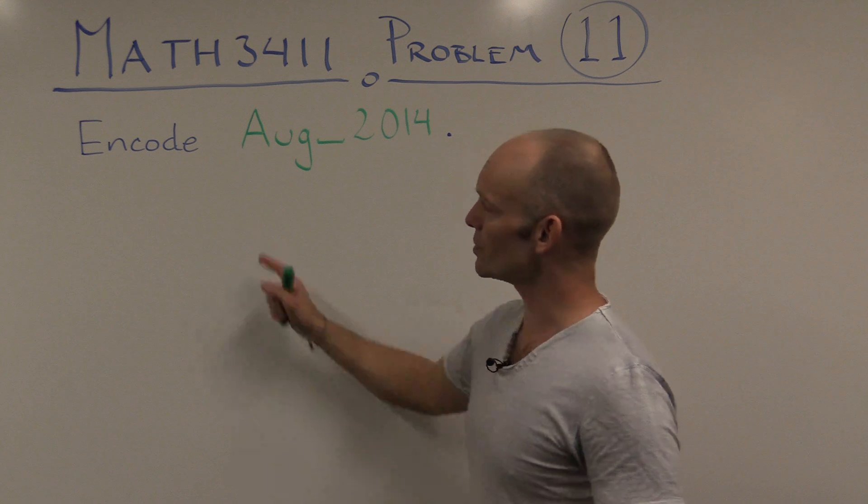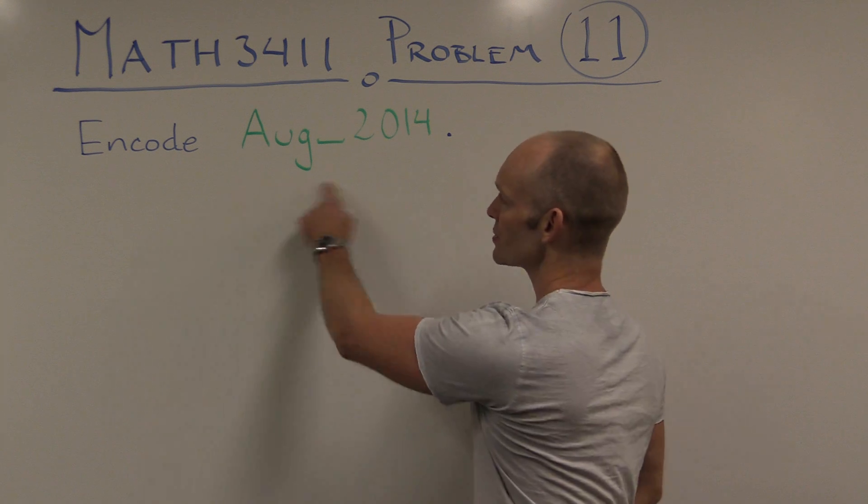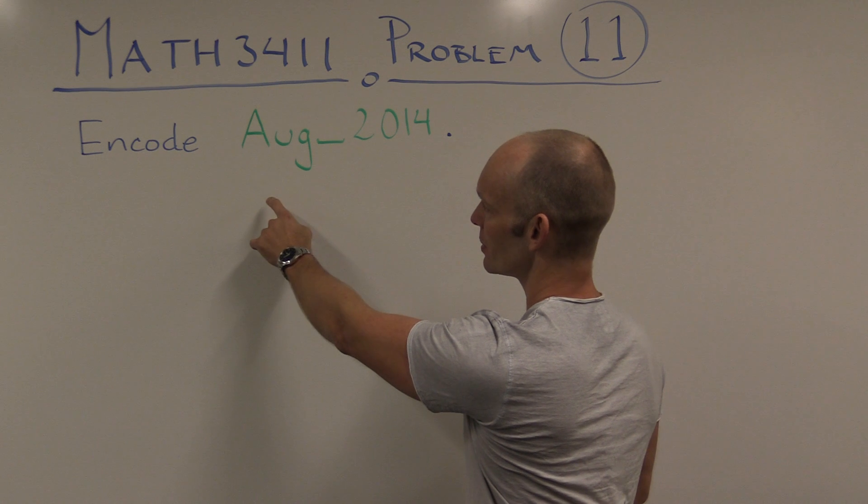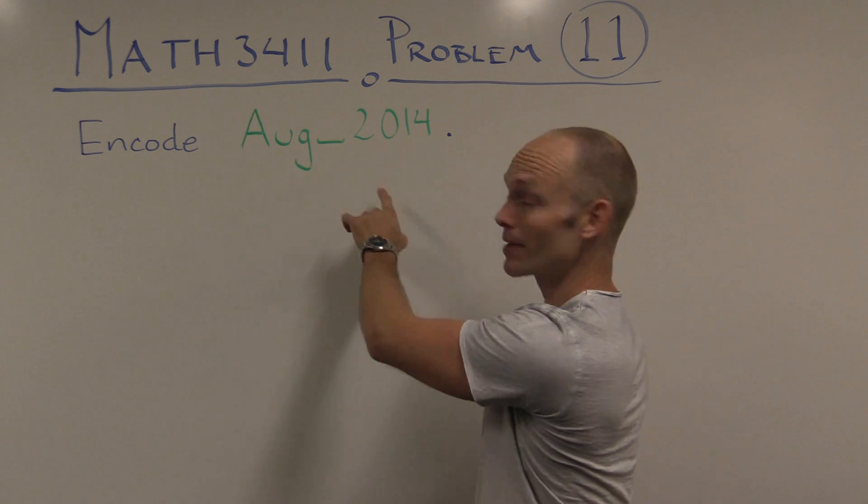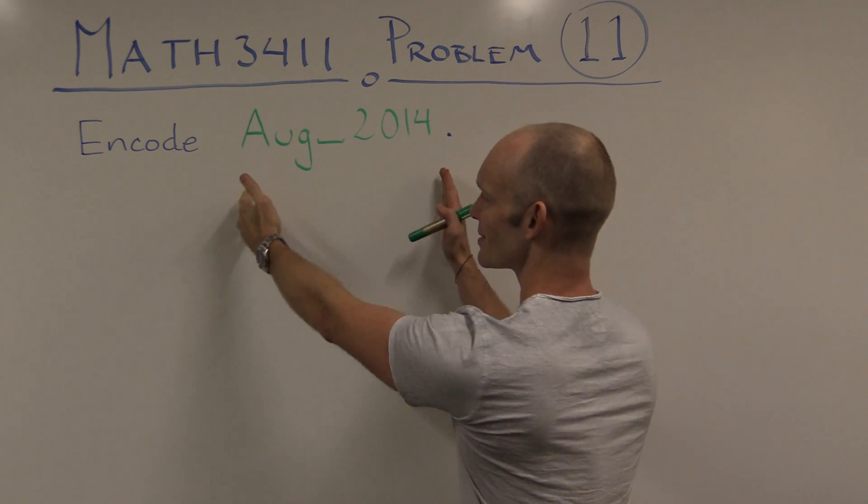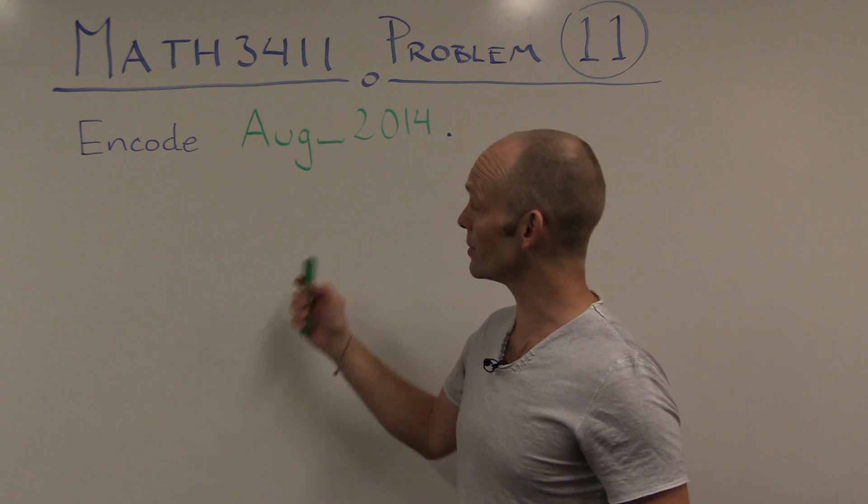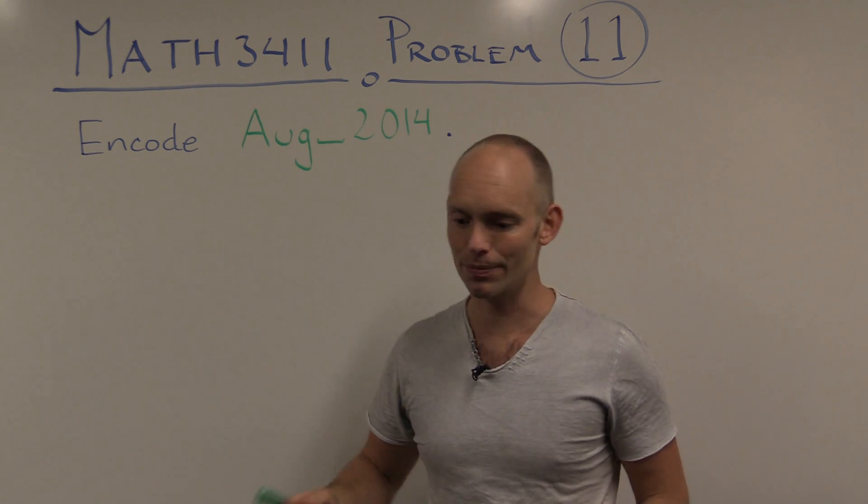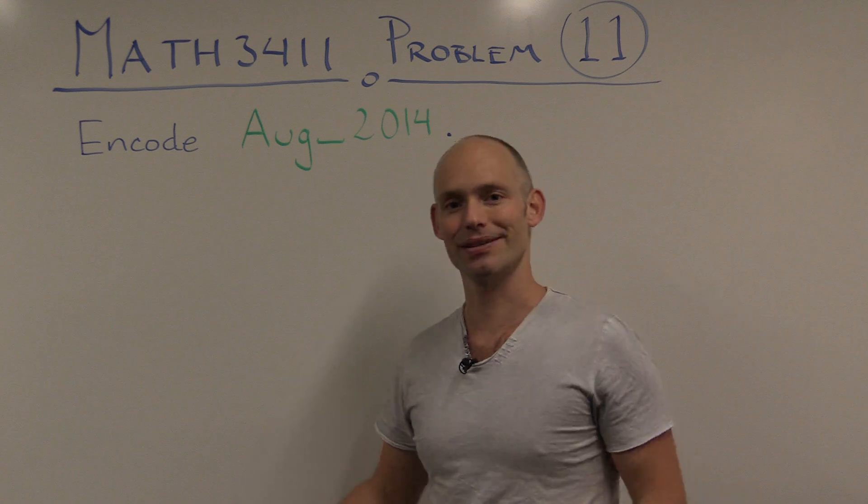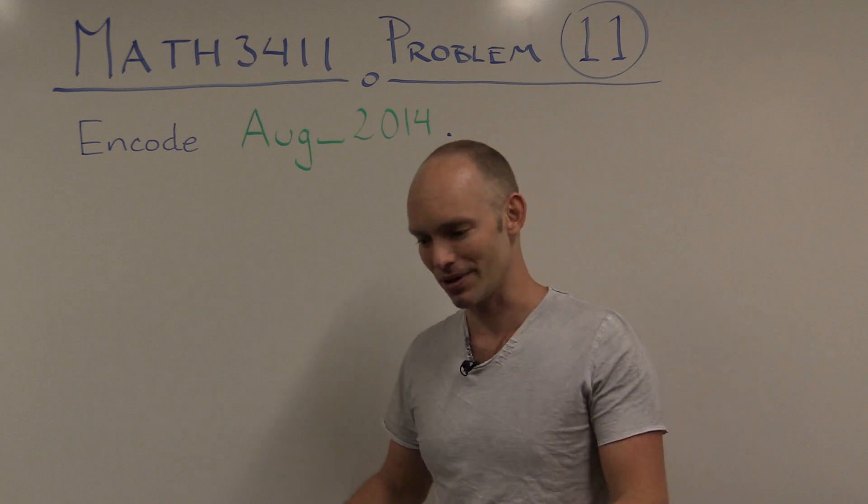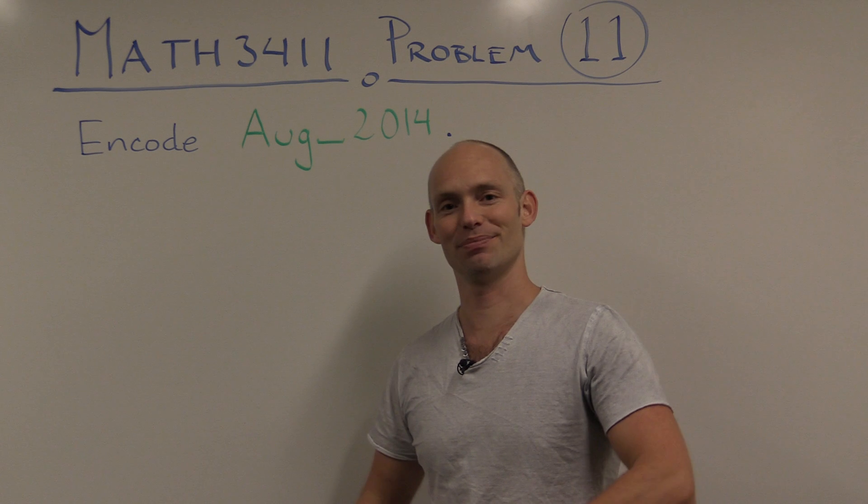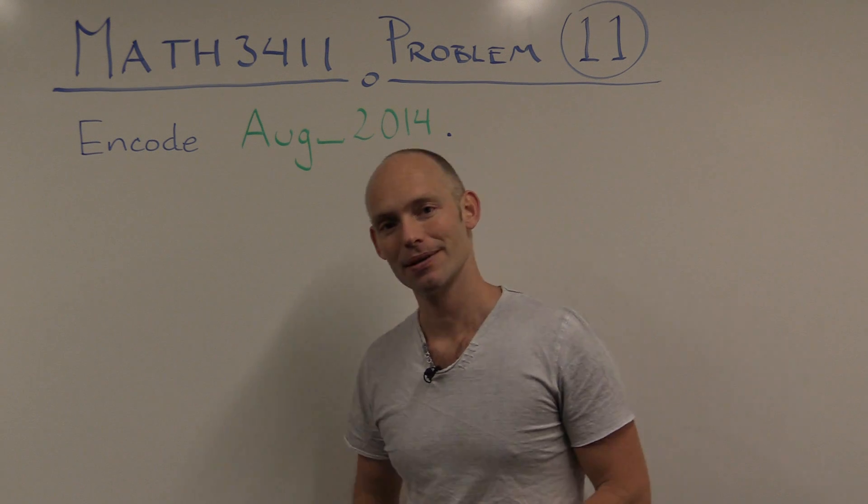So what we have to do is we have to encode this little message here, AUG space 2014, so there are 8 characters that we have to encode, and the way that we have to encode it is using the 9-character 8-bit even-parity ASCII burst code. A bit of a mouthful and I probably got it wrong, but that's what we have to do.